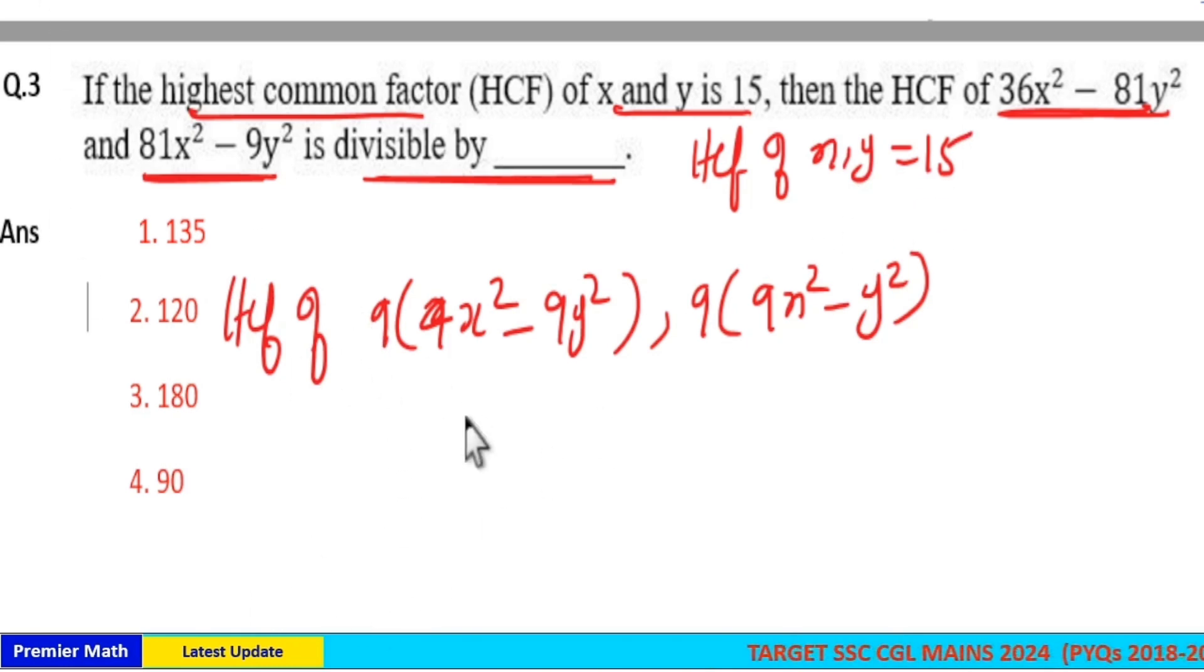From the first term and second term, 9 is a common factor and 4x² - 9y² and 9x² - y² is remaining. So x² - y² is common in both the terms.